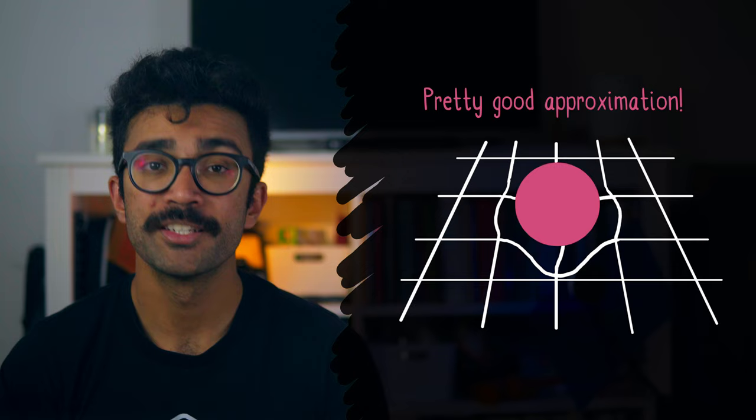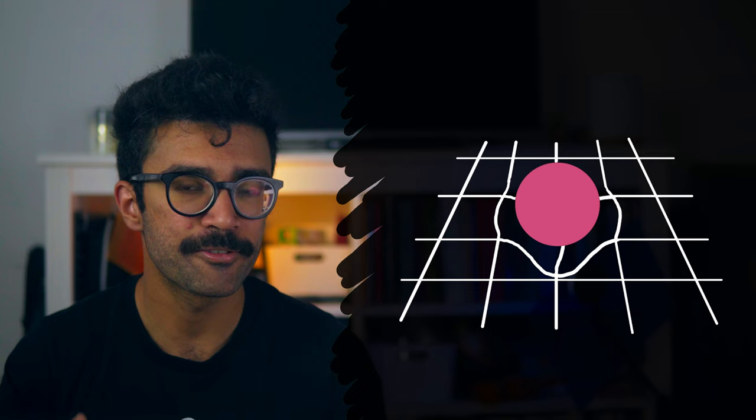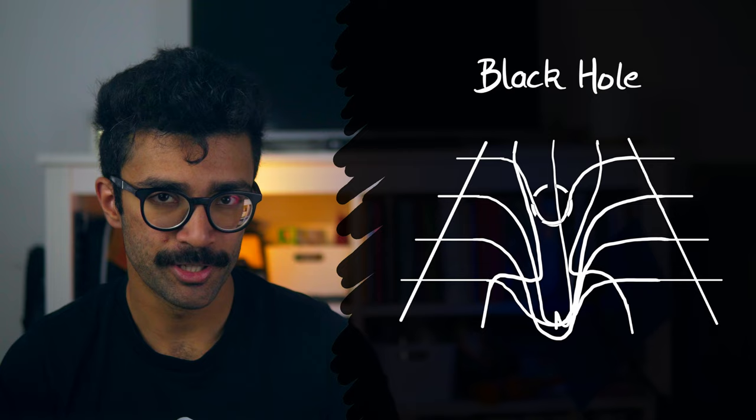The Schwarzschild metric is probably most well-known for describing another kind of object entirely, though. One which has an extremely large mass packed into a small enough region of space-time that the space-time around it becomes very significantly warped. Yes, we're talking about a black hole. The Schwarzschild metric can be used to show that these extremely dense objects do indeed warp space-time so much that even light cannot escape once it passes the event horizon.